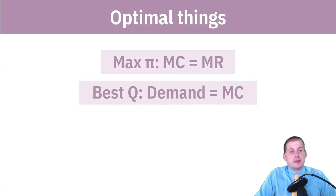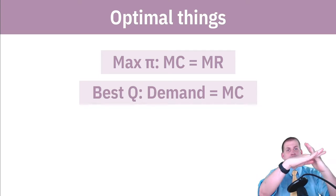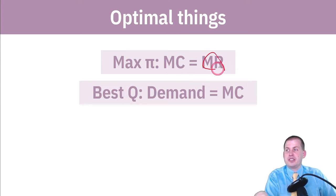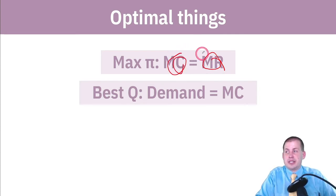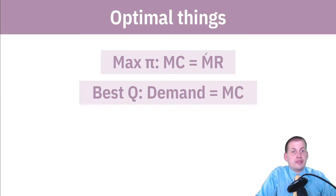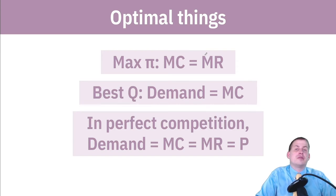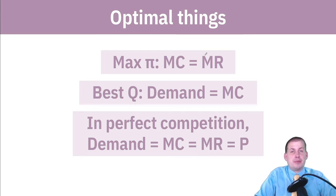To figure out the best quantity of stuff to make, you want to find where the demand curve meets the marginal cost curve, or where demand meets supply. That's going to be some prevailing market price, and it tells you the best quantity to make. In perfect competition, you want to set demand equal to marginal cost equal to marginal revenue equal to price — all of those things in a perfectly competitive market are the same, and that's where you'll make the most profit.